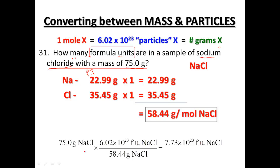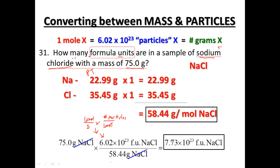Adding the two totals together, the molar mass is 58.44 grams of sodium chloride per mole. Starting with 75 grams of sodium chloride, we go from grams to moles to number of formula units using the condensed step. 75 grams times 6.02 times 10 to the 23rd divided by 58.44 grams of NaCl gives us 7.73 times 10 to the 23rd formula units of NaCl — formula units for an ionic compound.